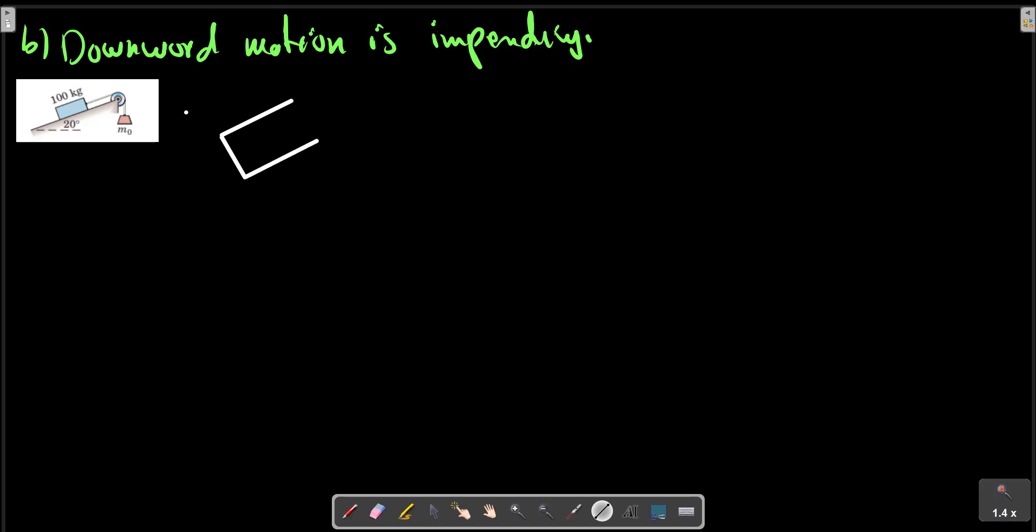As you see in the picture here, T is the same for the two blocks, and you also have N, the normal contact force. But in the downward motion is impending, the force friction is opposite to the motion and is in this direction.